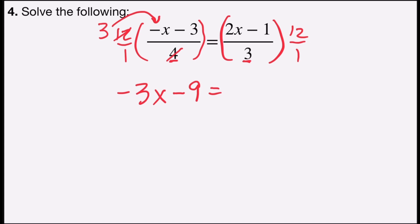On the right side, I'll do a similar process. 3 divides into 12 4 times, and I have 4 times the numerator, which is the distributive property. 4 times 2x is 8x, minus 4 times 1 is 4.